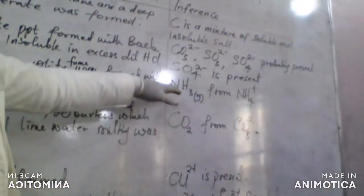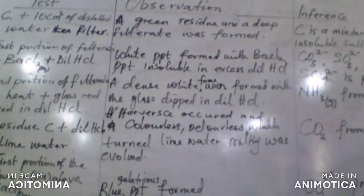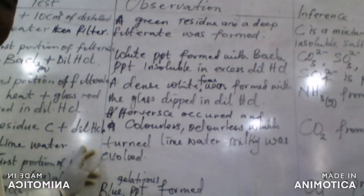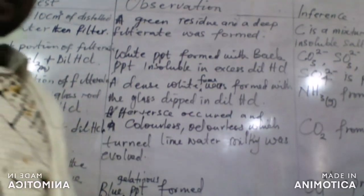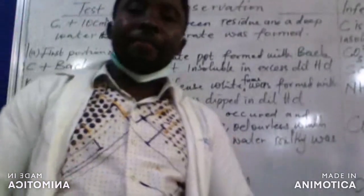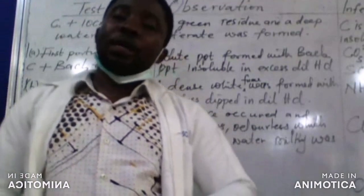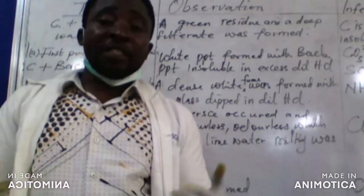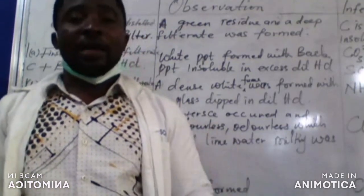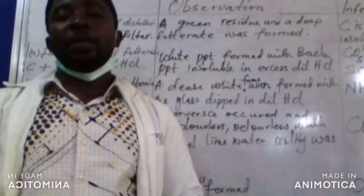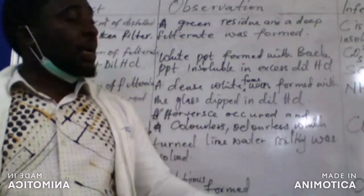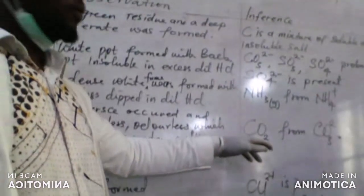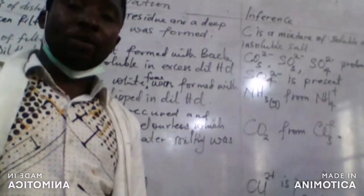The next instruction says we should add residue C to dilute hydrochloric acid and pass the resulting gas towards lime water. When we added dilute hydrochloric acid to the residue, effervescence occurred and a colorless, odorless gas was evolved that turned lime water milky. That gas is probably carbon dioxide from the trioxocarbonate(IV) ion, CO₃²⁻.